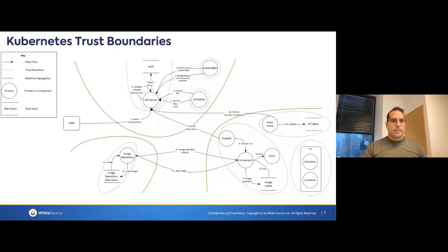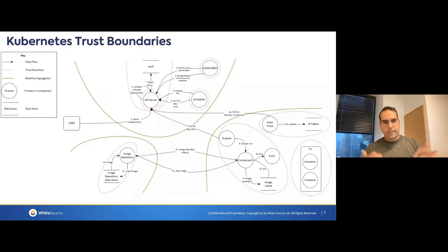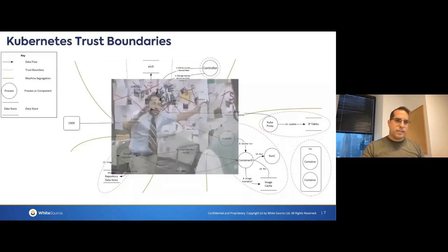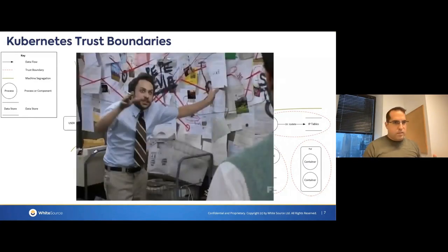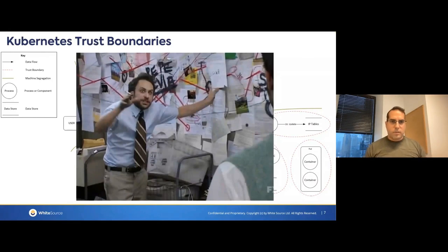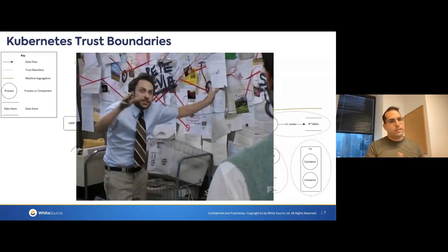There are a lot of layers and a lot of stuff going on. There are a lot of security controls that can be implemented on each component. What I would like you to take from this is to learn that this visual is out there, understand it's a complex system, and go and use it for your needs inside your organization. If you have any questions, at the end of the slides there is my email address and my Twitter handle, so feel free to reach out to me.